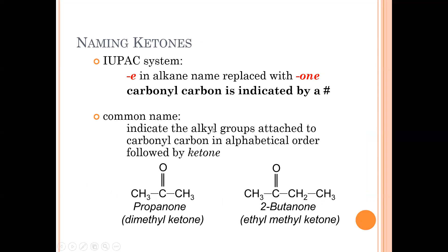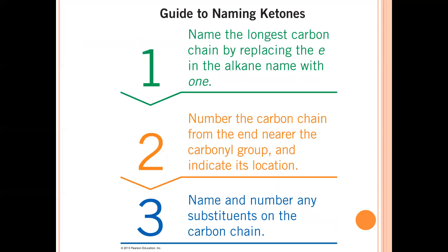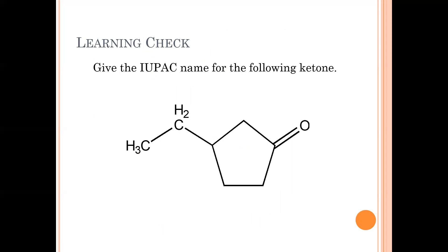For naming ketones, since the carbonyl carbon is in the middle rather than at the end, we name the longest alkane chain, drop the E, and add ONE. We number the chain so that the carbonyl carbon gets the lowest number possible — starting from the end closest to it — then name any other substituents. This is very similar to naming alcohols.